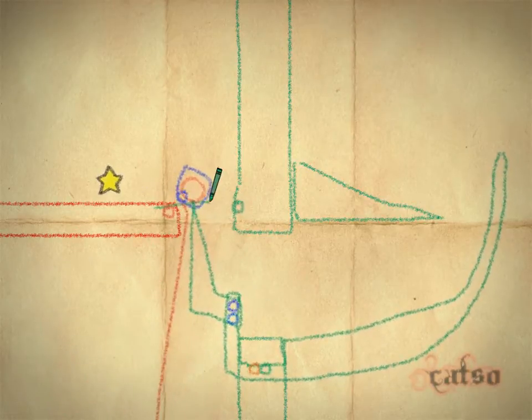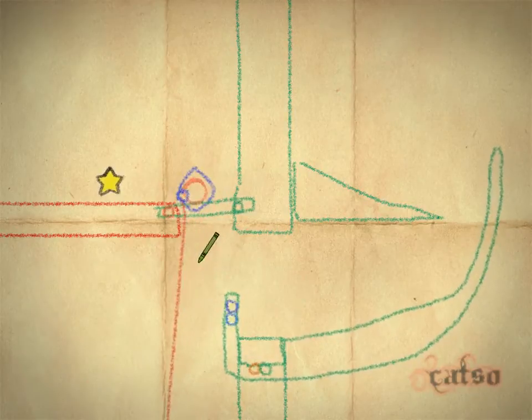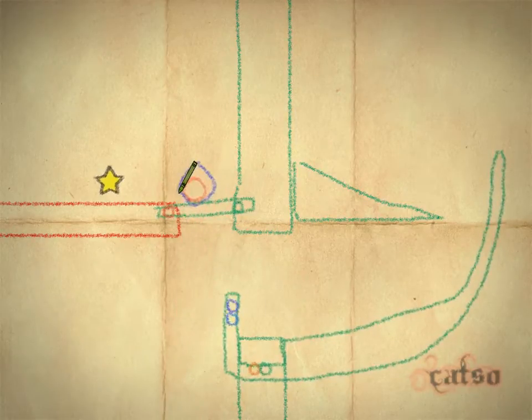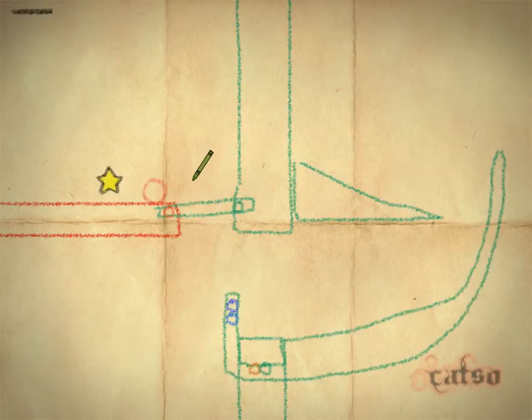And then you put a box here. Then you cut the line, then you roll the ball over here, and you win. Yay! And that's how you complete the final level of Crayon Physics.